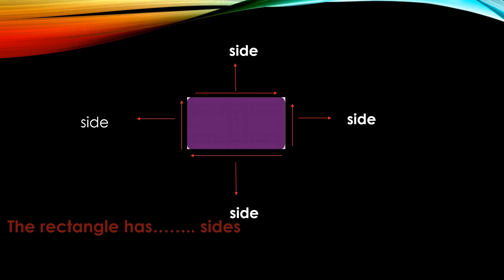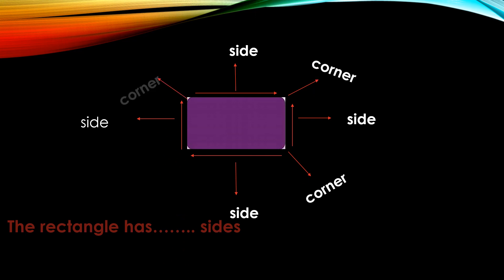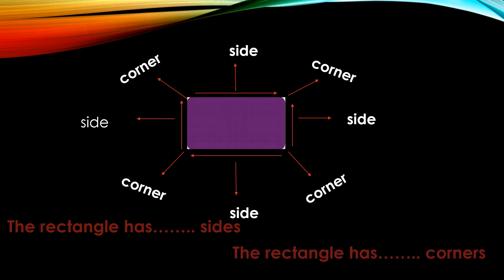Let's count the sides of the rectangle: one, two, three, four. So the rectangle has four sides. And the corners — this is a corner, and corner, and corner, and corner. Let's count: one, two, three, four. So the rectangle has four corners. Thank you!